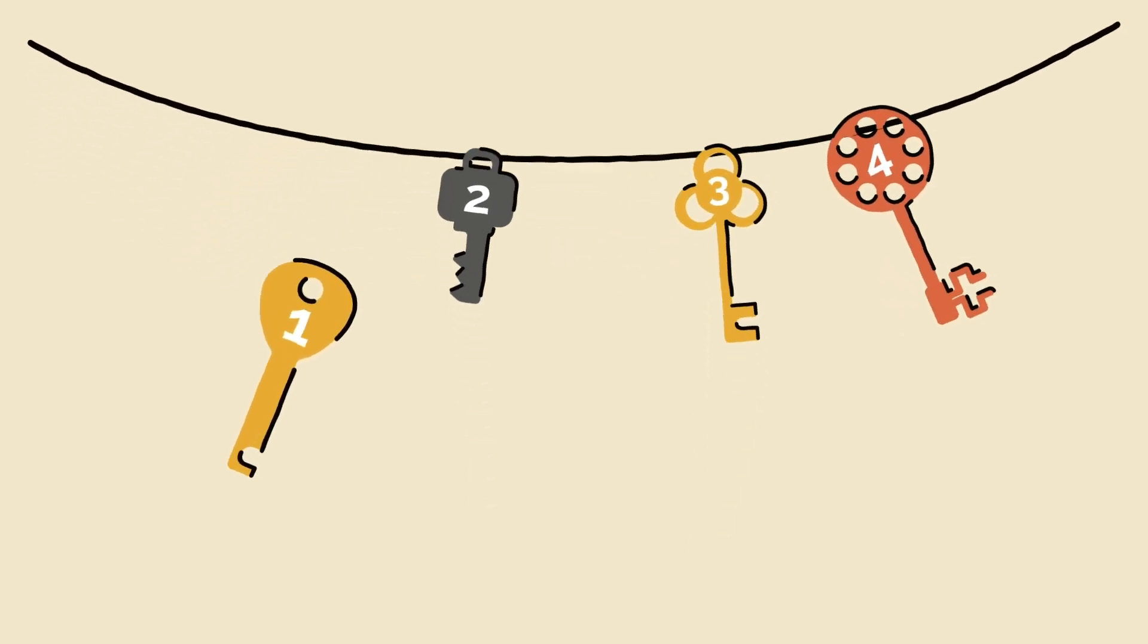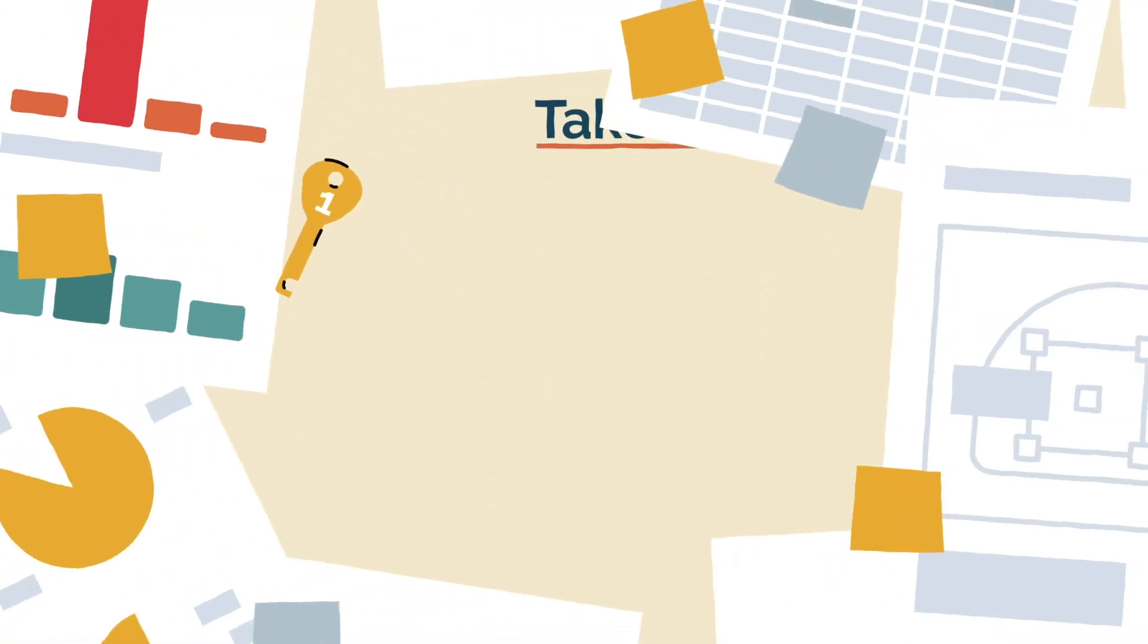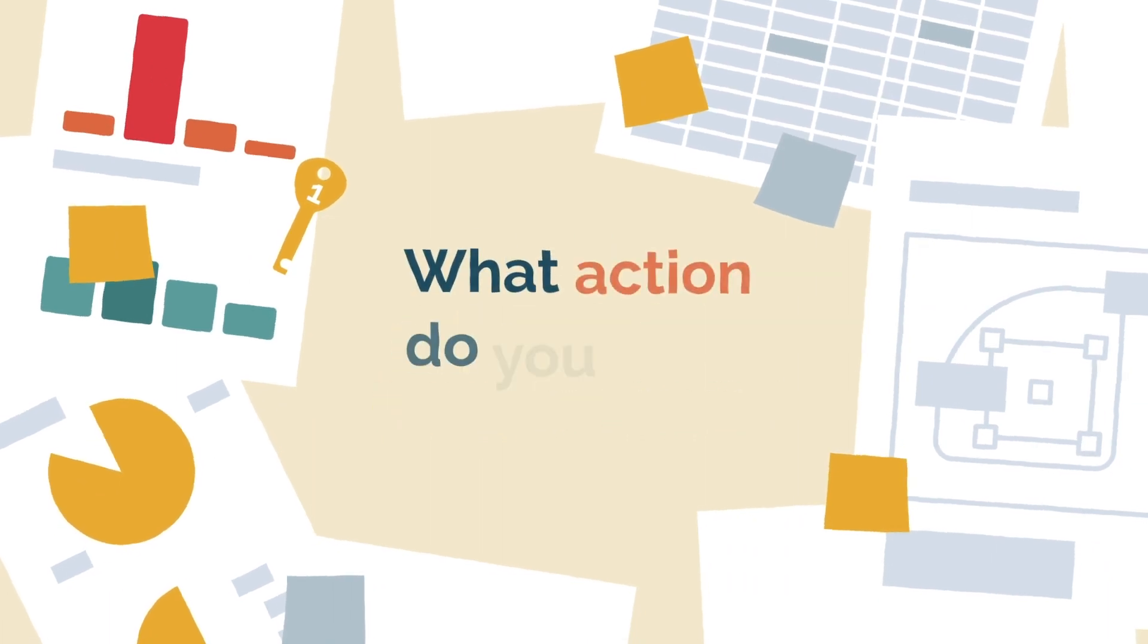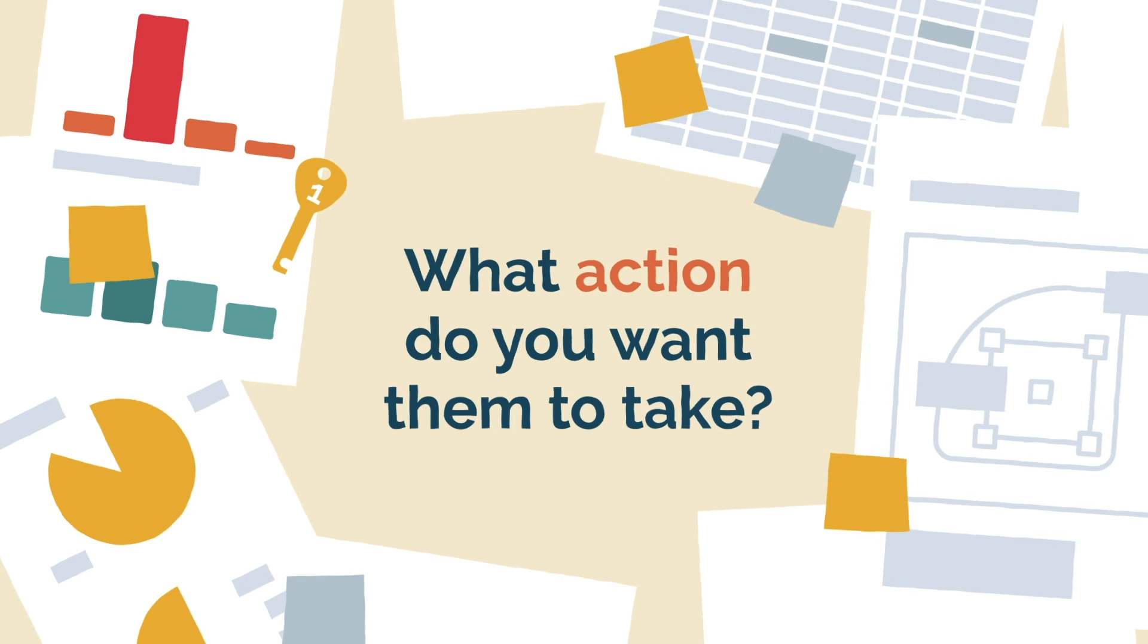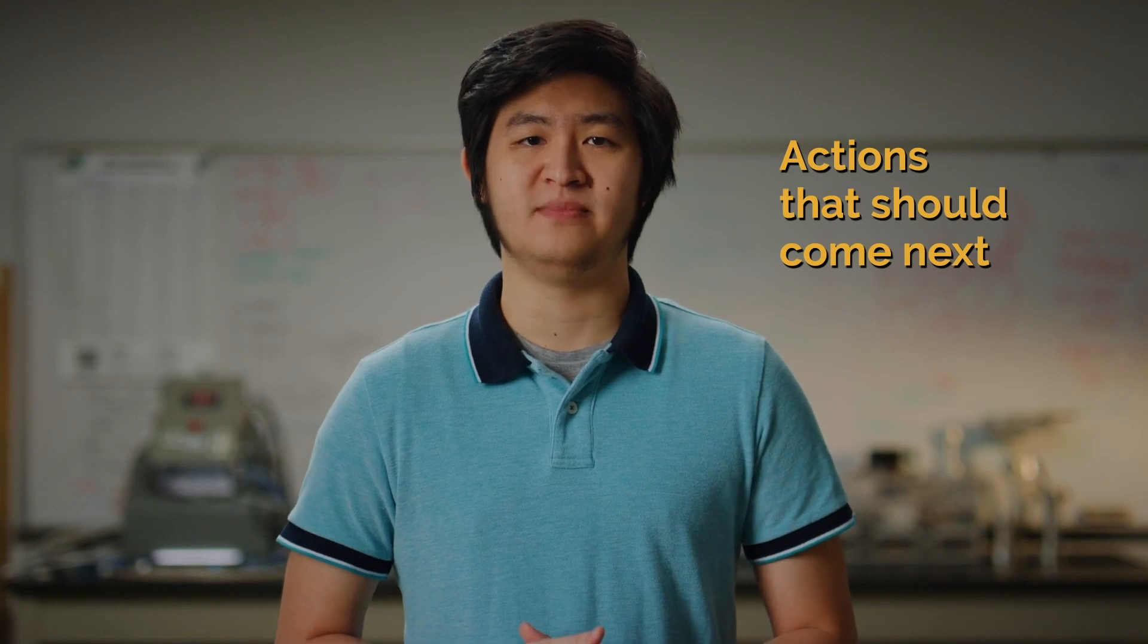The first key is to think about the main takeaways from the data. He needs to consider what the stakeholders want to know, what they need to know, and the action that he wants them to take after learning about the results. The way Marty can do this is by creating a convincing story designed to highlight the takeaways, one that explains the connections between important results and actions that should come next.